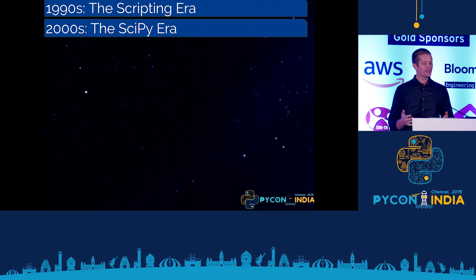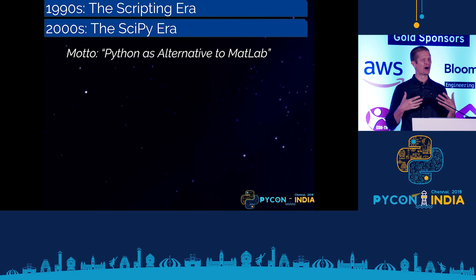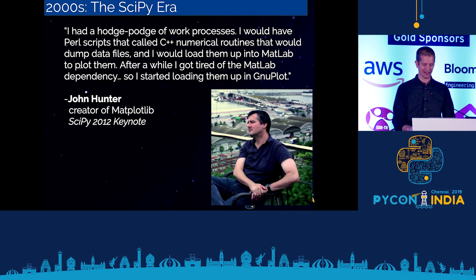That was the scripting era in the 90s — Python as an alternative to Bash. In the 2000s, I think of that as the SciPy era, with the motto: Python is an alternative to MATLAB. MATLAB is a powerful system that many scientists and engineers have used for data analysis and visualization. In the early 2000s, a lot of people were excited about Python as a tool for gluing together data analysis workflows, and asked: why can't we use Python for the kinds of things we're using MATLAB for right now?